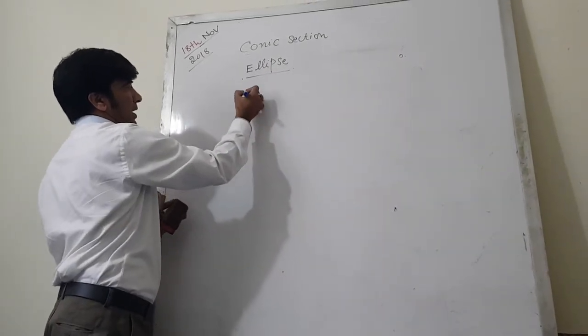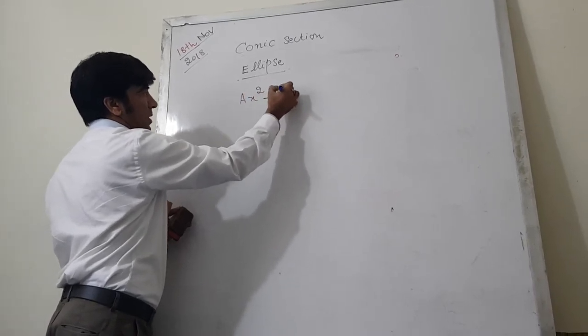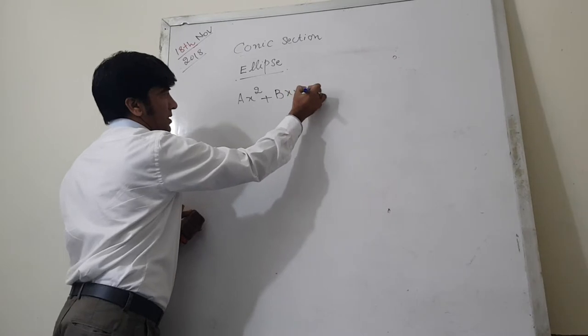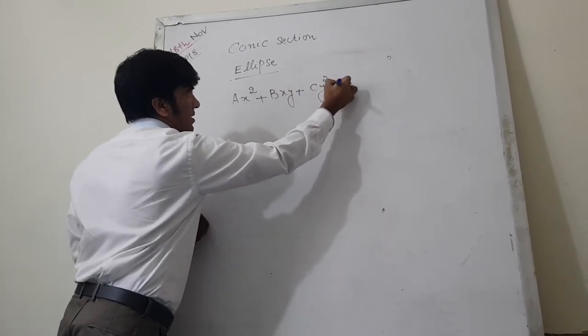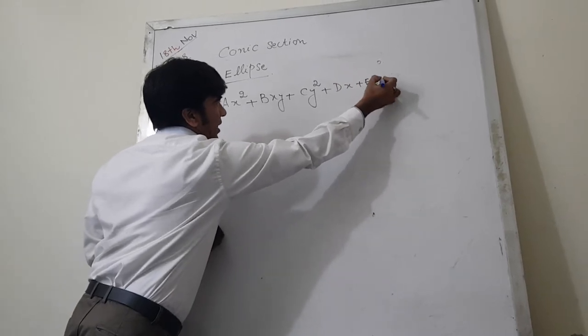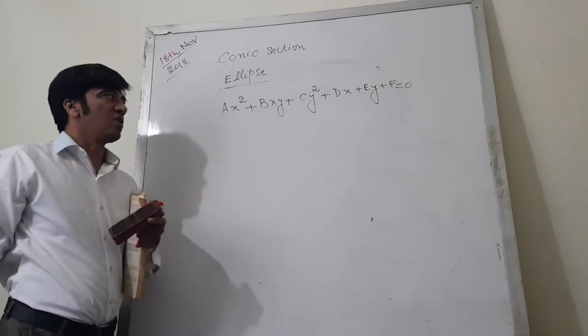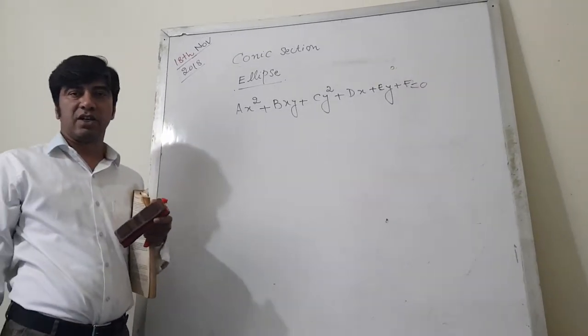Ellipse. As we start from the beginning: ax² + bxy + cy² + dx + ey + f. This is the general quadratic equation.